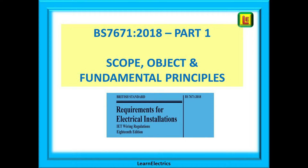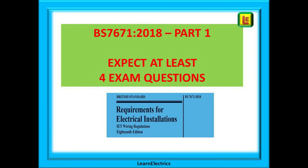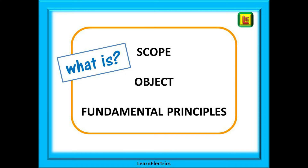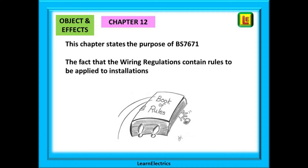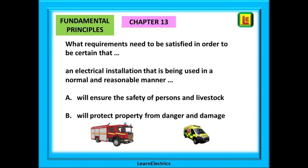Part one of BS 7671:2018 is about the scope, object, and fundamental principles of the wiring regulations. Many people skip over this section, but it is actually quite important in setting the scene for electrical installation work. Expect at least four exam questions on this section. Chapter 11 is about the scope or limits — it tells us what is and what is not covered by the regulations. Chapter 12 is the object and effects, explaining the purpose of the regulations, stating that the wiring regulations contain rules to be applied to electrical installations. Fundamental principles is chapter 13, covering what requirements need to be satisfied to ensure the safety of persons and livestock.